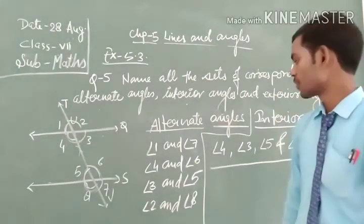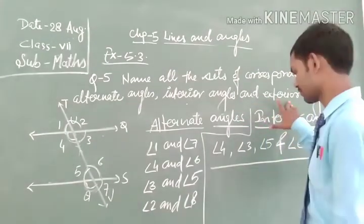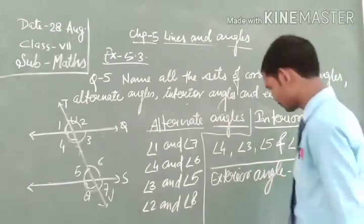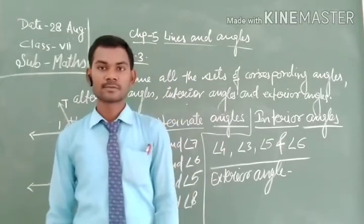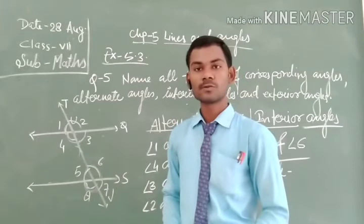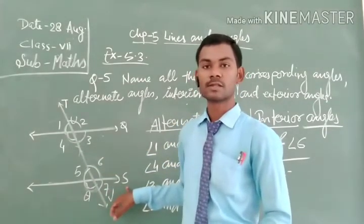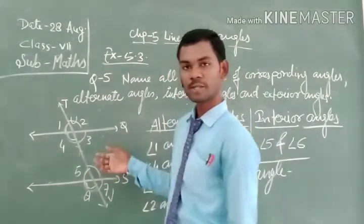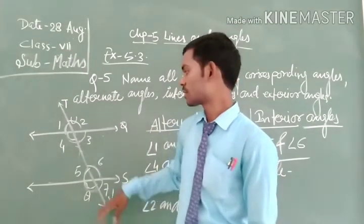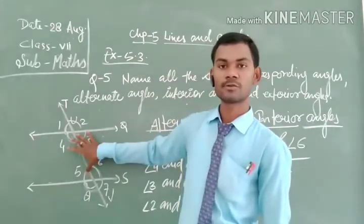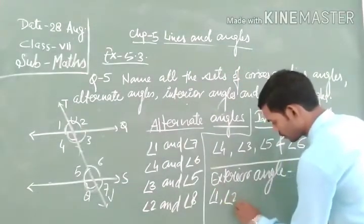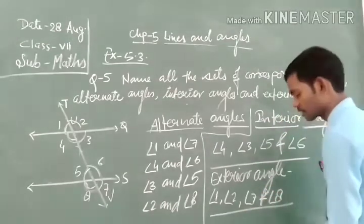Next, we have to find the exterior angles. Angles which do not have the line segment UV and also do not lie between the given lines Q and S are exterior angles. So angle 1, angle 2, angle 7, and angle 8 are the exterior angles because they do not have the line segment UV and also do not lie between Q and S.